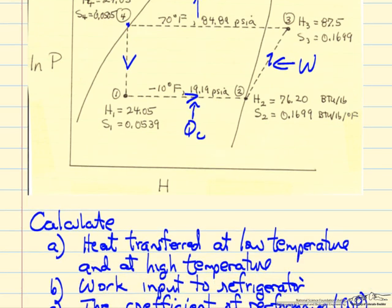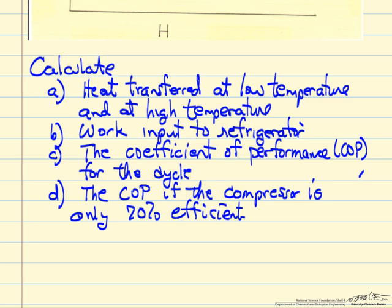Calculate the work input going from 2 to 3. This is the compressor and this is the throttle valve. Also calculate the coefficient of performance, which indicates how efficiently the compressor work removes heat from the low temperature, and finally calculate the coefficient of performance if the compressor is only 70% efficient.